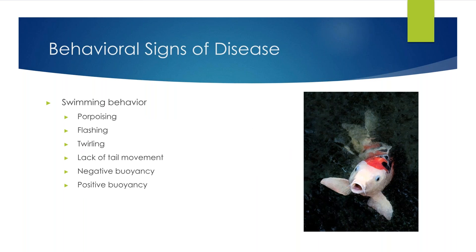Different swimming behaviors that may indicate disease include porpoising — jumping out of the water like a porpoise; flashing, as we discussed with parasites; twirling in a circle, where the direction can actually indicate where the injury is; lack of tail movement, where we perform a neurologic test if a spinal injury is suspected; and buoyancy problems — a fish that is negatively buoyant and on the bottom, or positively buoyant and stuck at the surface.